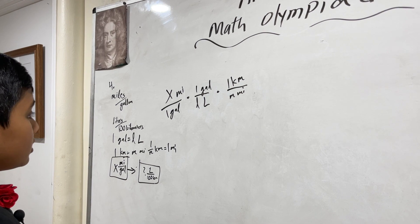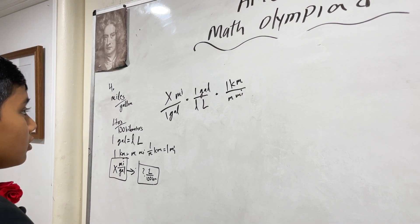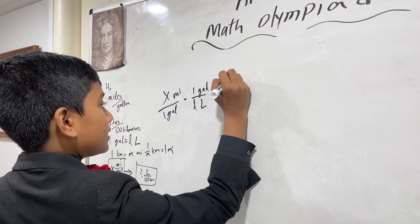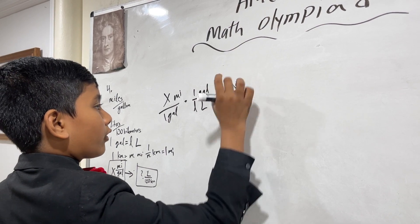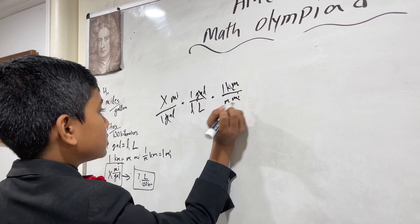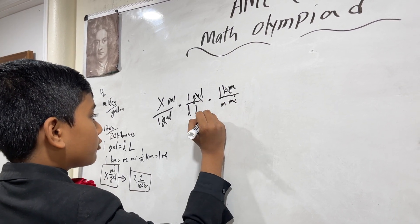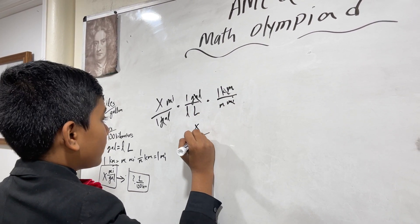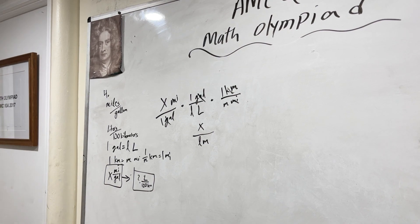And now, the special secret ingredient here. Let's get all of this cancellation over with first. So, we have kilometers, gallons, gallons, miles, miles. So, X times one times one over LM. Now, you might notice something.